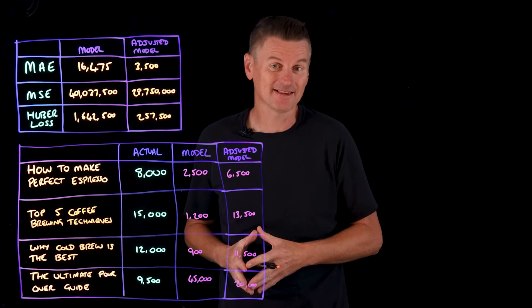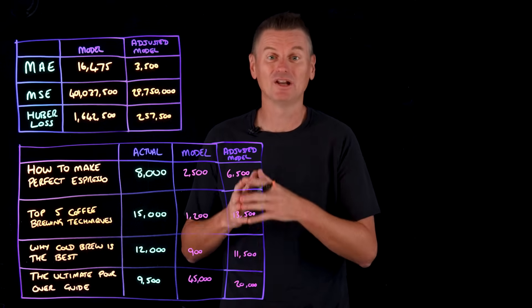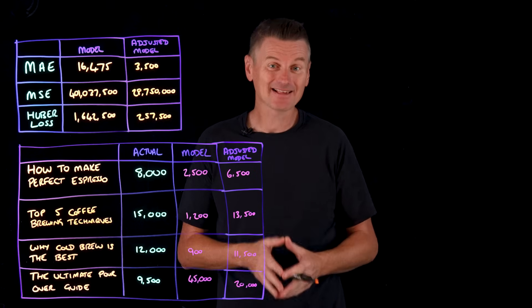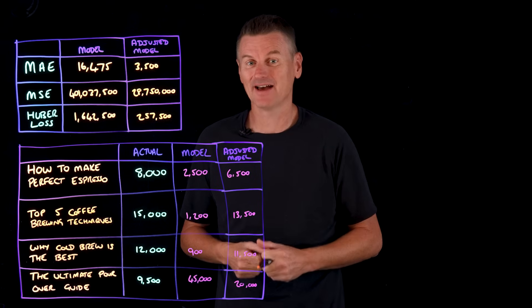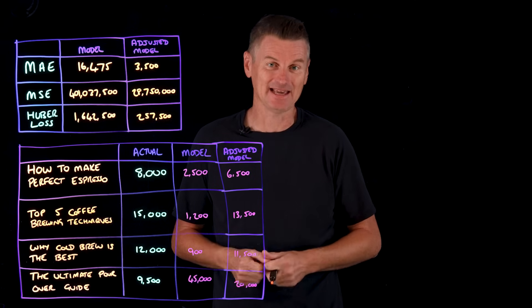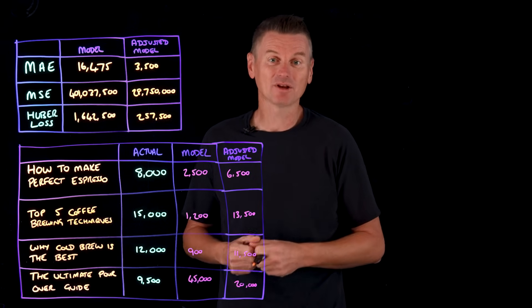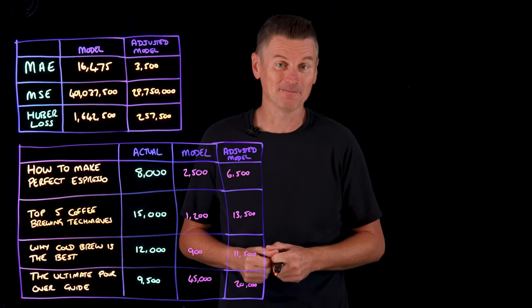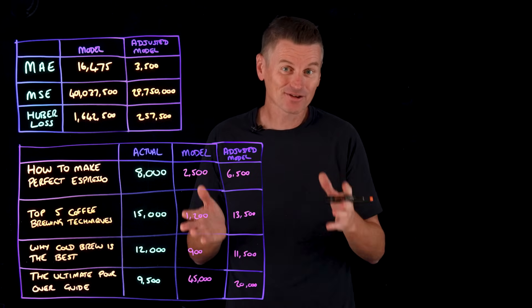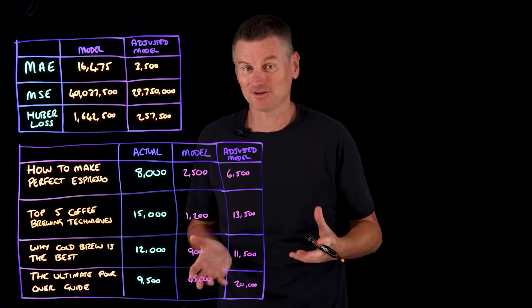In all three cases, the loss function is now lower, indicating less loss with the greatest effect on MSE, mean squared error, as the model reduced the large prediction error for the pour over video. That's loss function as an evaluation metric.